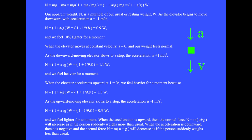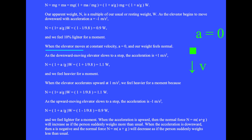As the elevator begins to move downward with acceleration A equals minus 1 meters per second squared, N equals (1 plus A over G) times W equals (1 minus 1 over 9.8) equals 0.9W, and we feel 10% lighter for a moment. When the elevator moves at constant velocity, the acceleration is zero and our weight feels normal.